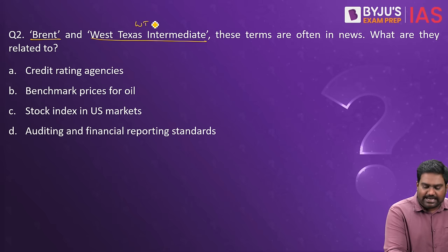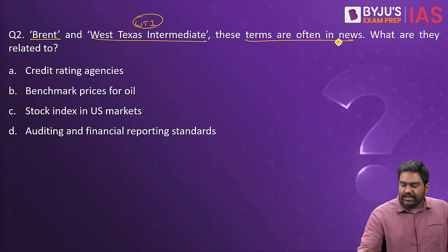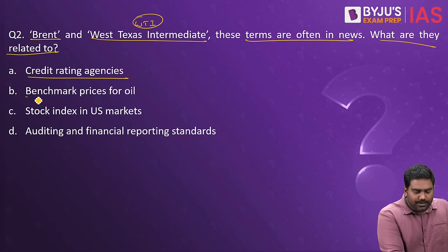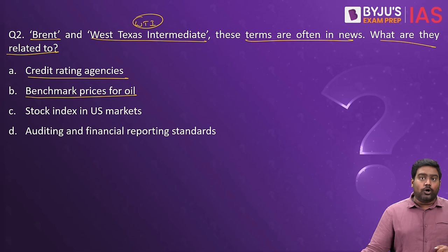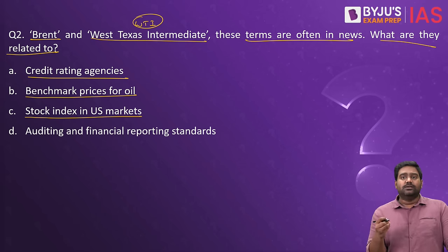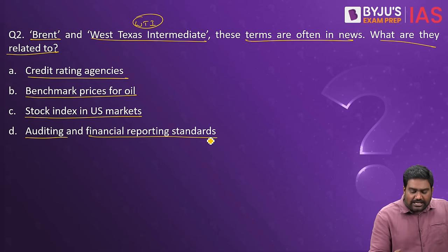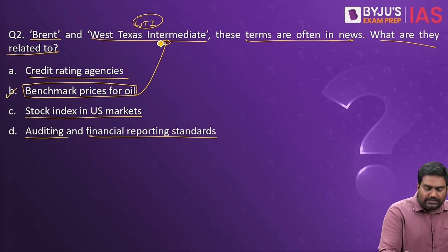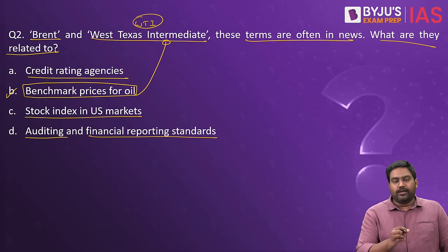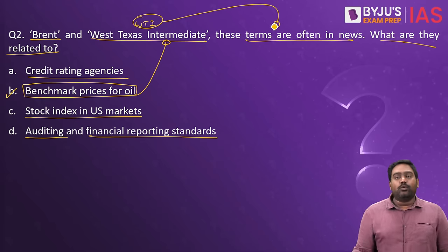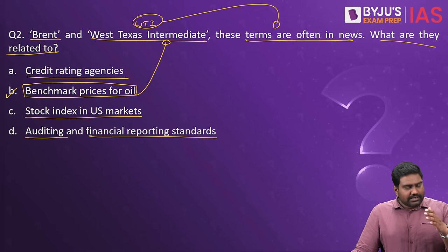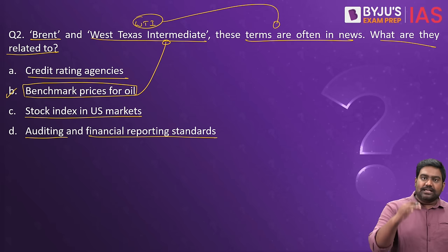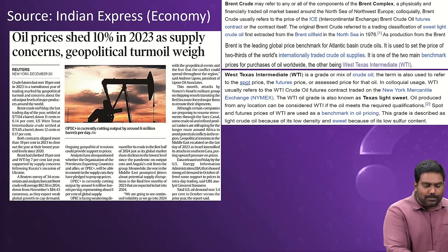Question number two: Brent and West Texas Intermediate, which are frequently in the news — what are they related to? Are they credit rating agencies, benchmark prices for oil in the global oil market, stock indices in the US market, or auditing and financial reporting standards followed globally? The correct answer is option B. The terms Brent crude and WTI or West Texas Intermediate are very frequently mentioned in economy-related articles. Articles dealing with oil prices will always mention these two benchmark prices for oil trade in the world.